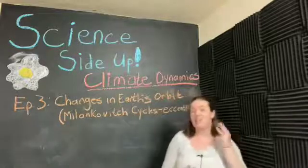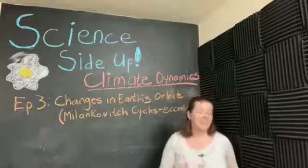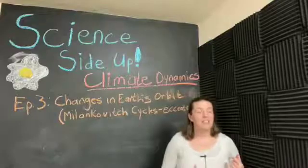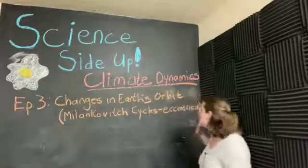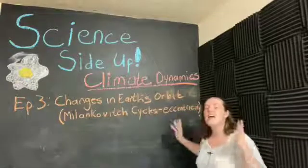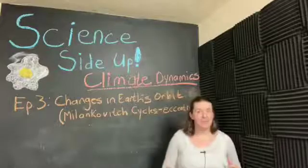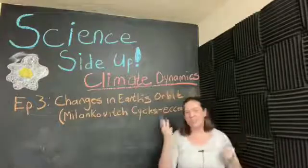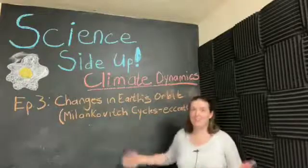There are three main things that change with Earth's orbit that affect its climate, and that's going to be our next three videos. Today, we're talking about eccentricity: the eccentricity of Earth's orbit, how it changes over time, and how that affects Earth's climate. Collectively, those three things that affect Earth's climate from its orbit are called Milankovitch cycles.